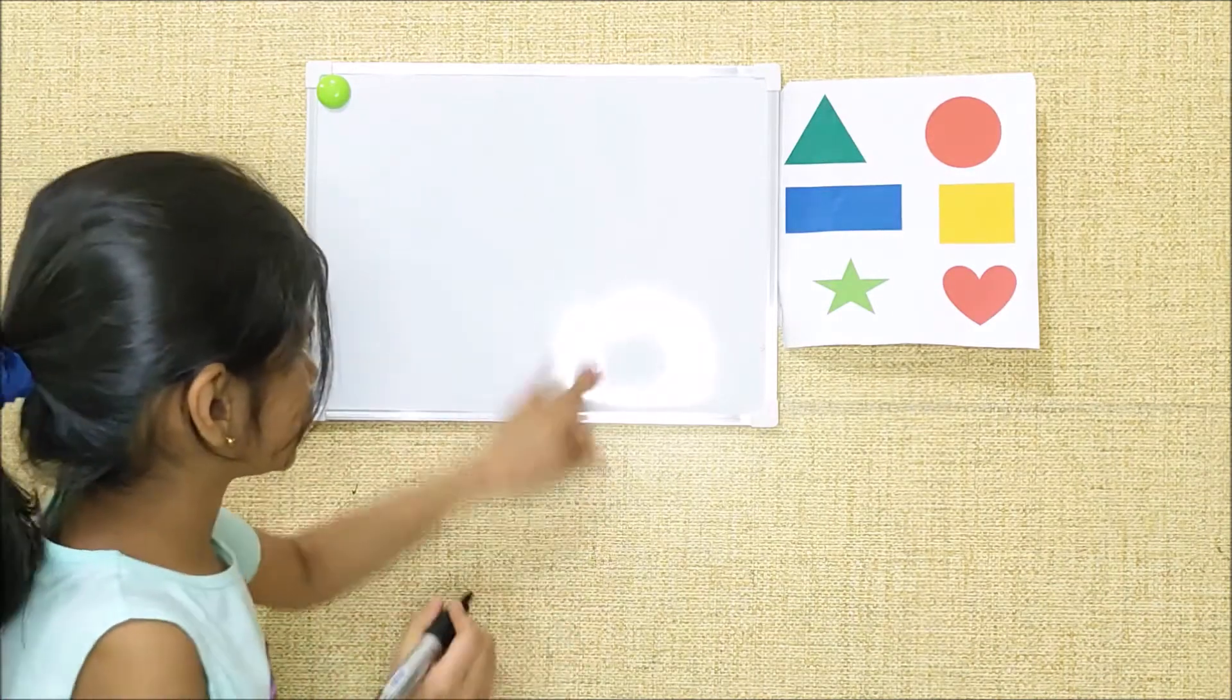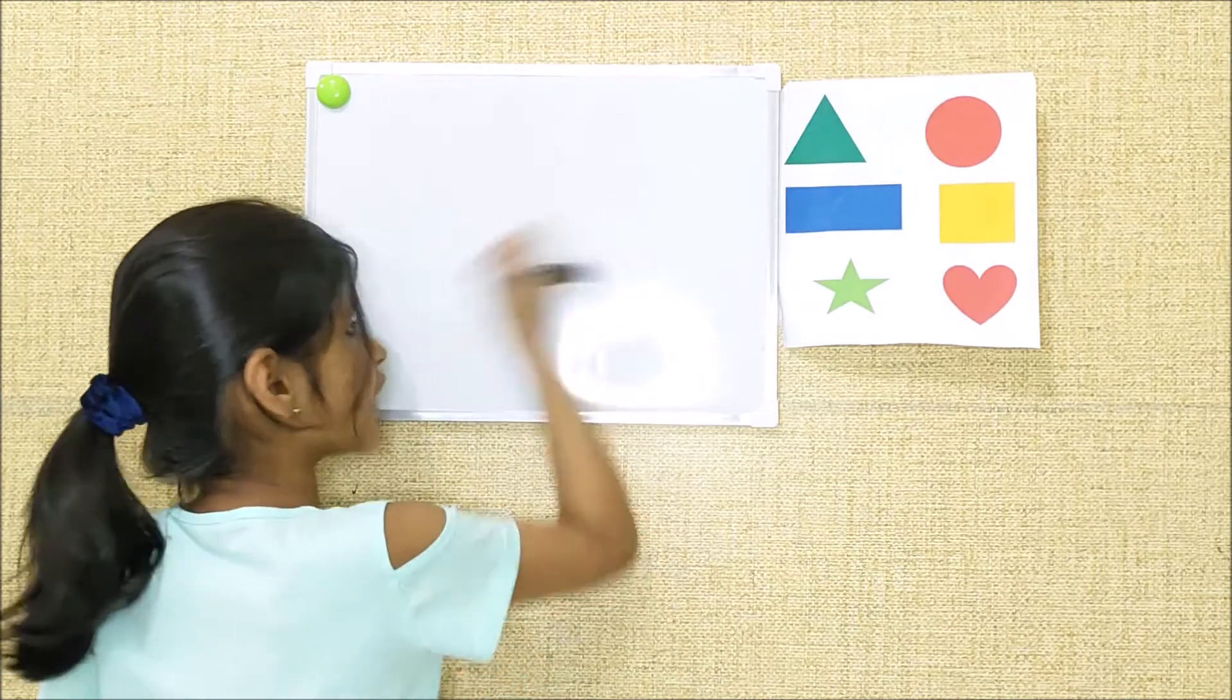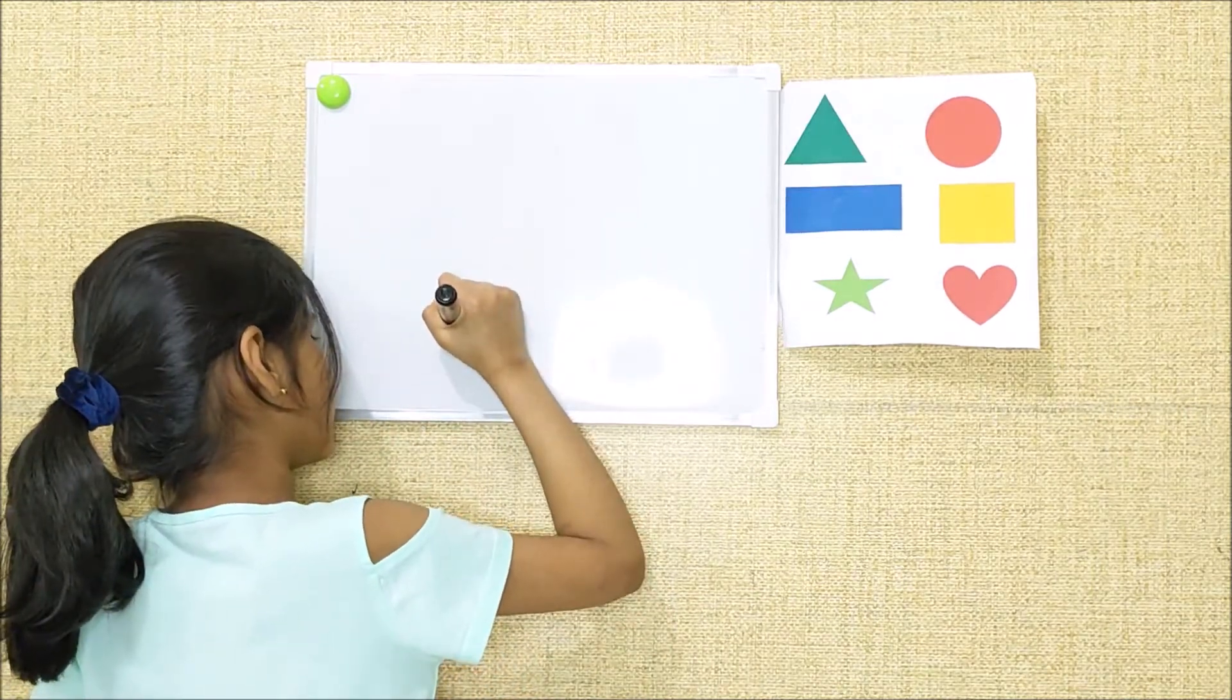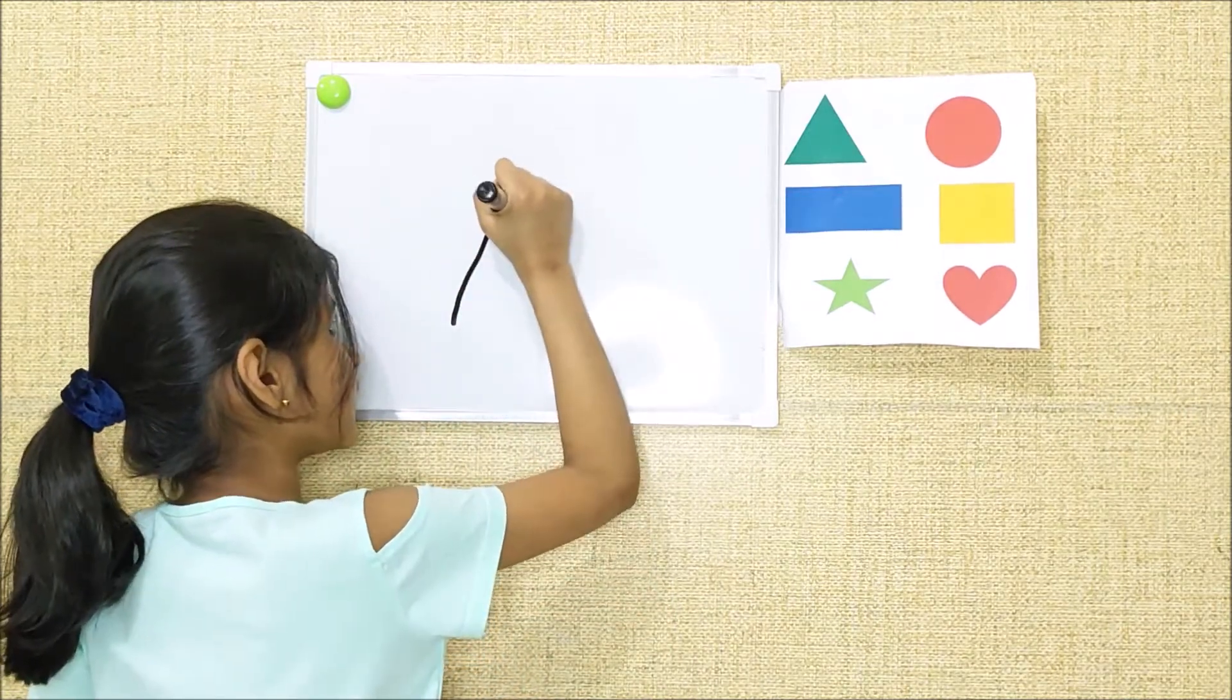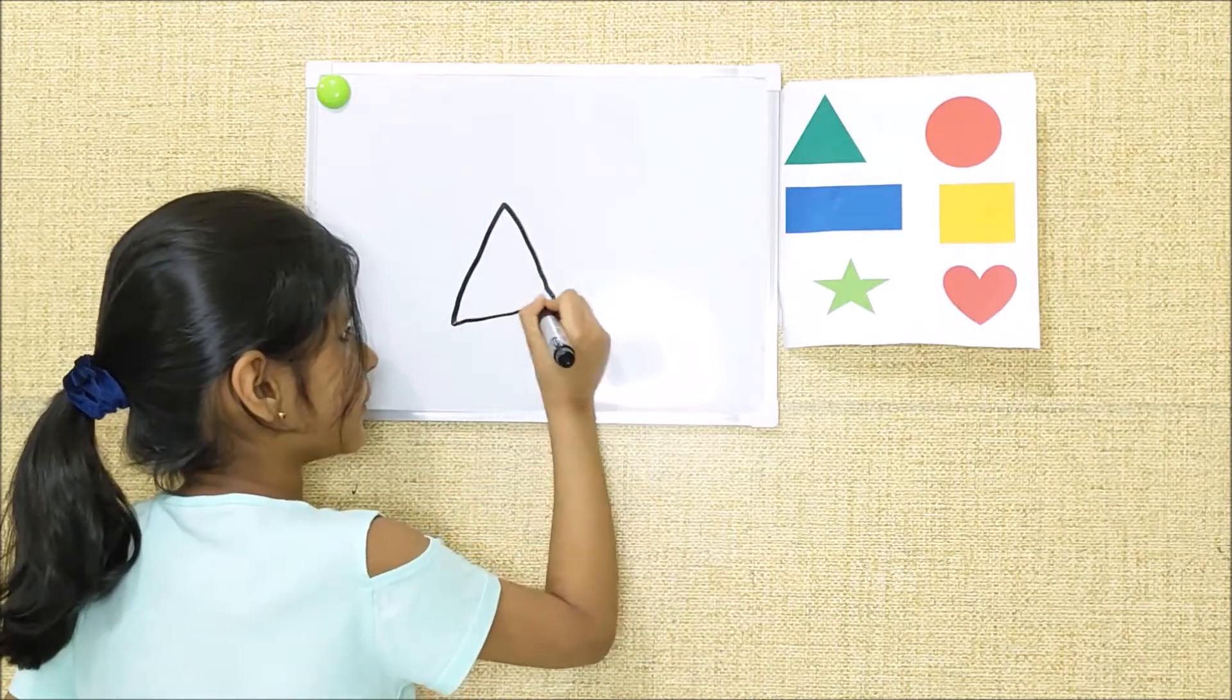So let's start. First you start with the right slanting line, then a left slanting line, then a sleeping line.